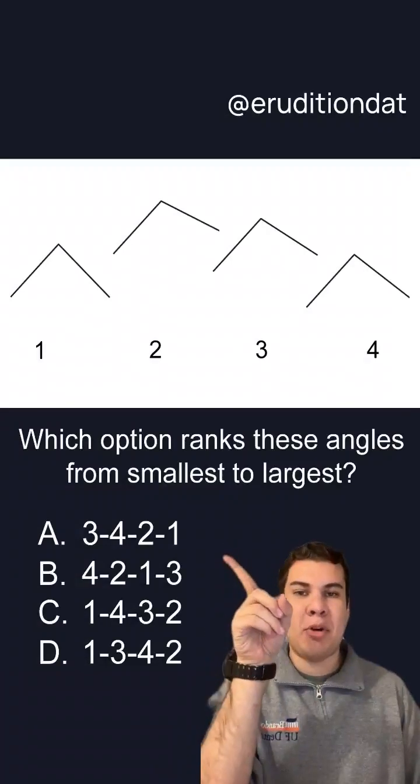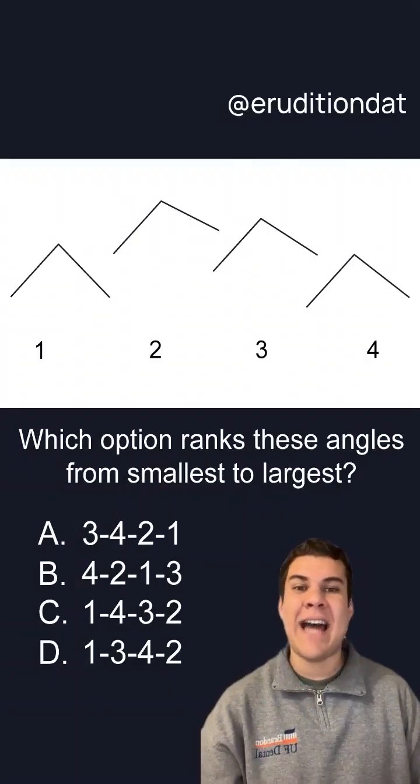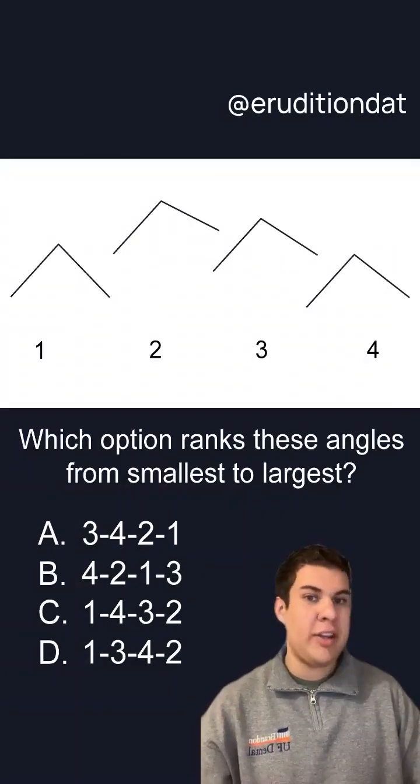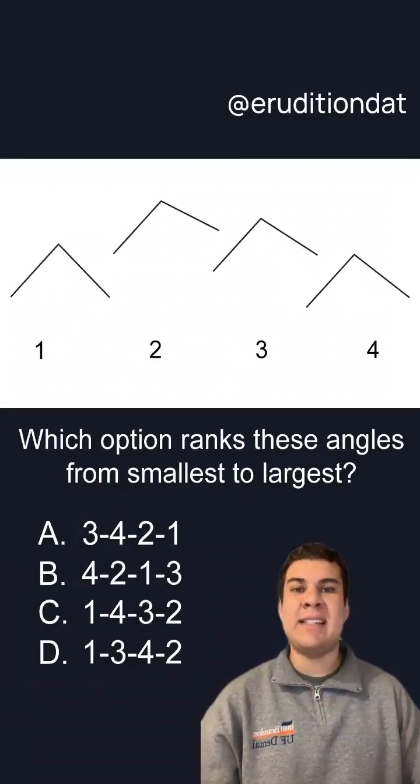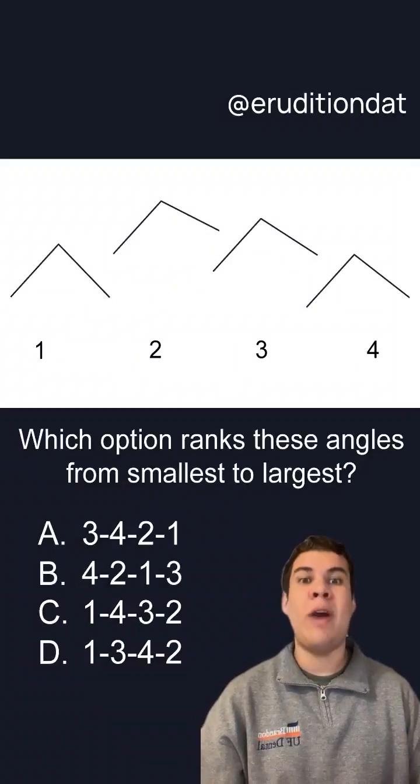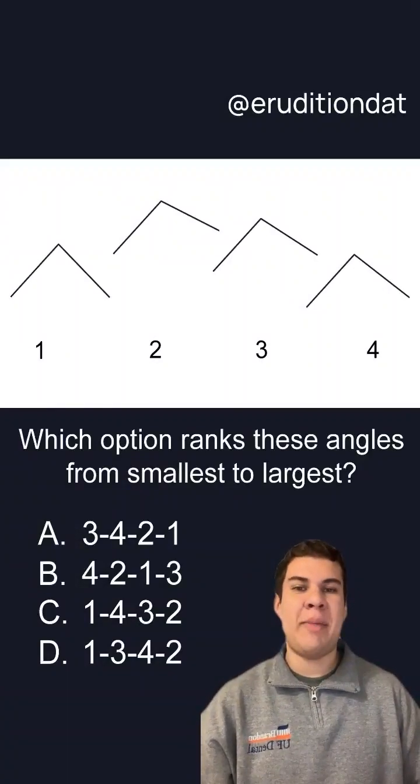When looking at angle number one all the way to the left, you can see that that one seems to be smaller than 90 degrees, whereas two, three, and four all seem to be slightly greater than 90 or way above 90.